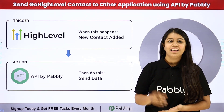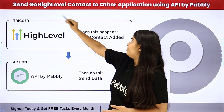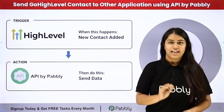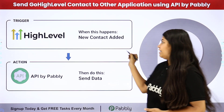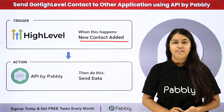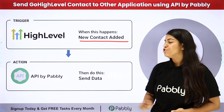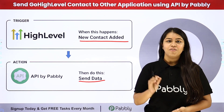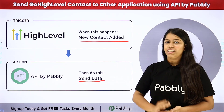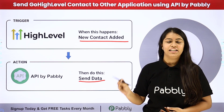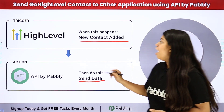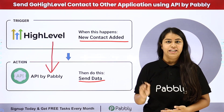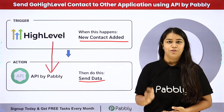Hello everyone, welcome back to Pabbly. The title of today's video is how to send Go High Level contact to another application using API by Pabbly. I am running a business and using Go High Level as my CRM, and I wish that as soon as a new contact is added, the details should be sent to another application using API by Pabbly. We are using API by Pabbly to create an integration between Go High Level and another application which is not natively integrated with Pabbly Connect. To create this connection without knowing any programming or coding language, we are going to use Pabbly Connect — an amazing automation software.